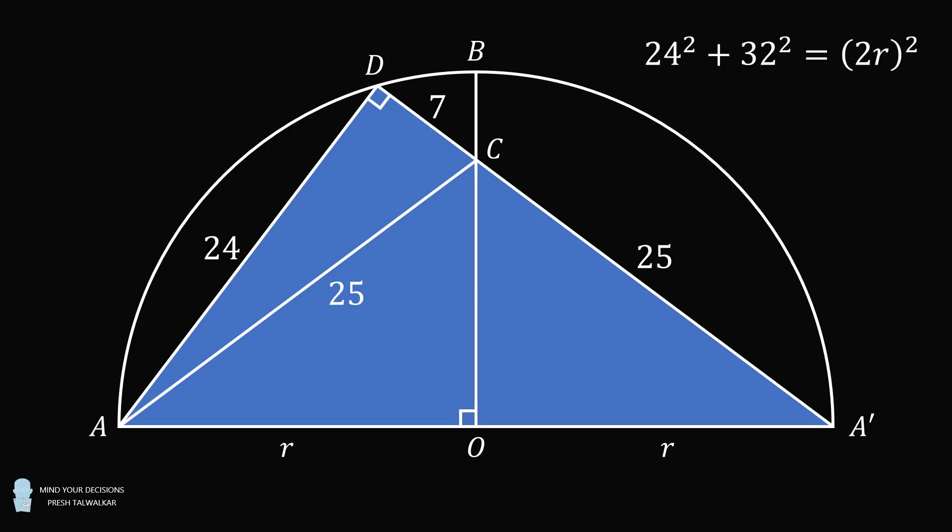Therefore, we have 24 squared plus 32 squared is equal to the quantity 2R squared. We can simplify this equation and solve for the positive value of R to get that R is equal to 20. So the radius of circle O is equal to 20. We'll substitute that in.